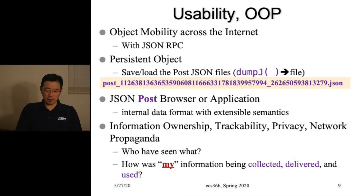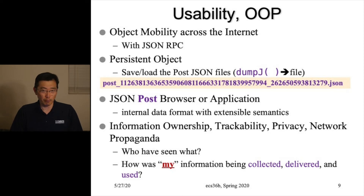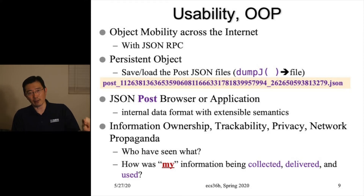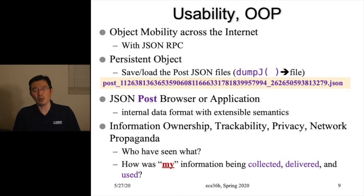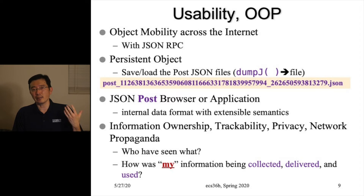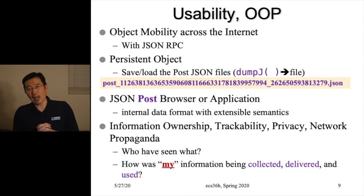The second concept is persistent object, which is very useful in real applications. So far, all objects you have created in C++ vanish when the program exits — the program puts objects in memory, and when it's done, they're gone. A post can accumulate 400,000 comments, and you don't expect the program to run continuously throughout that lifetime without power outages, server crashes, or other disruptions.